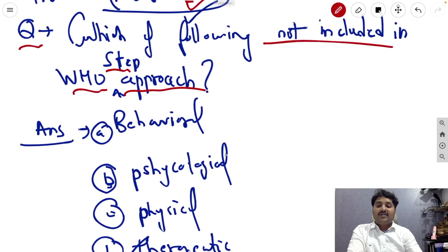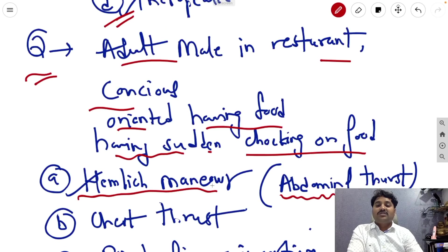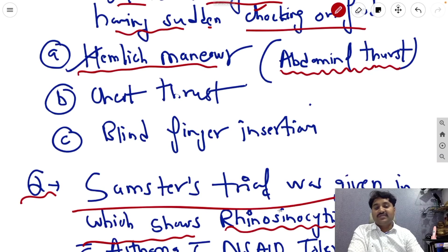Which of the following is not included in the WHO step approach? The answer is therapeutic. All approaches are available in this step: behavioral, psychological, and physical, but therapeutic is not. Next question, adult male in the restaurant conscious, oriented, having food, having sudden choking on the food. The answer is Heimlich maneuver, that is abdominal thrust is given, not the chest and blind finger insertion.